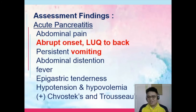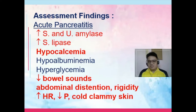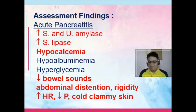Chvostek sign is characterized by facial muscle twitching or spasms, while Trousseau sign is characterized by carpopedal spasm. In acute pancreatitis, there is an increase of both serum and urine amylase and an increase of lipase. Calcium levels are decreased, albumin levels are also decreased — contributing to fluid volume problems — and hyperglycemia occurs because insulin will not function properly when the pancreas is compromised.